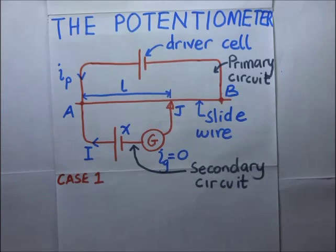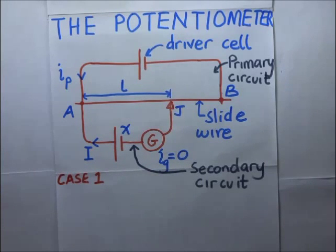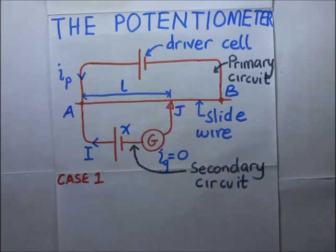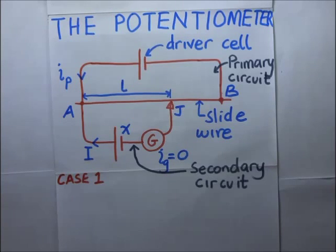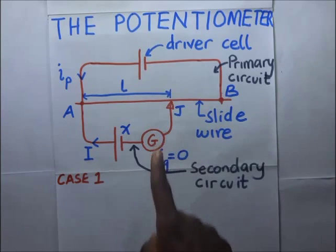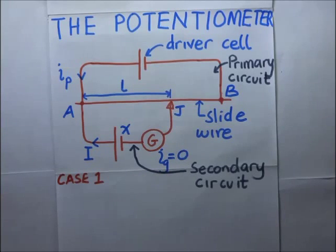A potentiometer is used to find the unknown PD connected across it. The unknown potential difference in the secondary circuit can be a PD across a resistor, the terminal potential difference of a cell on an open or closed circuit, or the EMF of a thermocouple. Another advantage of the potentiometer is that no current flows in the secondary circuit, so no power is consumed in that circuit. It is also used to measure voltage drops produced by an unknown current through a known standard resistance, for calibration of voltmeters and ammeters, and as an industrial standard.